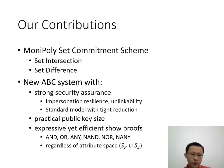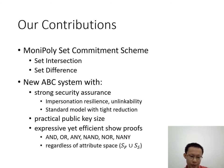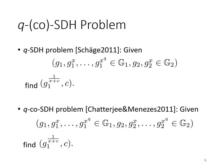Our first contribution is to propose a Monopoly set commitment scheme which can support set intersection and set difference operations. Based on this set commitment scheme, we construct a new ABC system with strong security assurance, which is secure against impersonation and unlinkability, and it can be proven so in the standard model with tight reduction. We also have a practical public key size and expressive yet efficient show proofs. Our show proofs can support the clauses of ALL, OR, threshold ANY, negated ALL, negated OR, and negated ANY, regardless of the attribute space. Our proposed scheme is based on two hard problems: the QSDH problem and the QCOSDH problem.